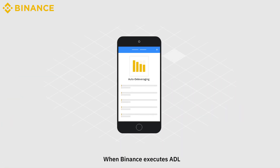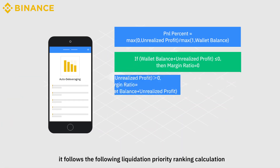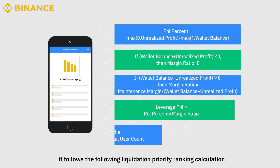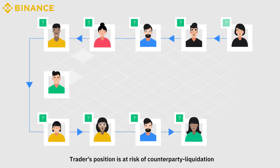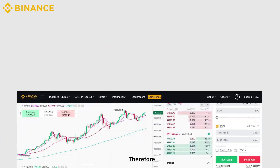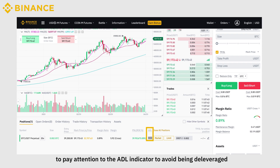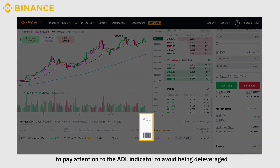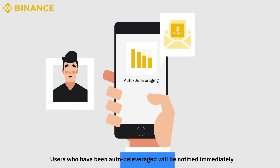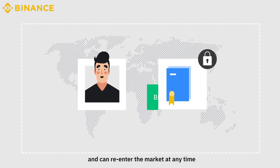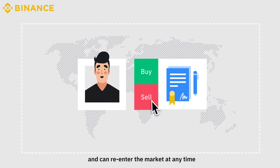When Binance executes ADL, it follows a liquidation priority ranking calculation. A trader's position is at risk of counterparty liquidation based on an indicator with priority in the queue. Therefore, it is highly recommended to pay attention to the ADL indicator to avoid being deleveraged. Users who have been auto-deleveraged will be notified immediately and can re-enter the market at any time.